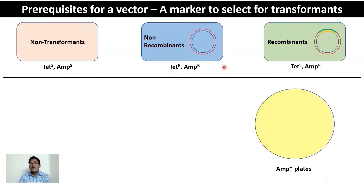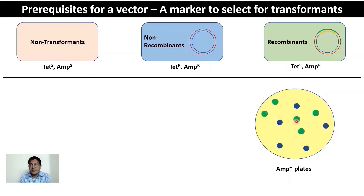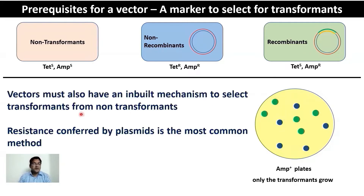In recombinant transformants, the MCS is placed within the tetracycline resistance gene. Because the insert disrupts this gene, recombinants lose tetracycline resistance but retain ampicillin resistance. Both recombinant and non-recombinant transformants are ampicillin-resistant, while non-transformants are ampicillin-sensitive. When you plate on ampicillin-positive plates, only the true transformants (both recombinant and non-recombinant) will grow, eliminating the non-transformants. This is the first selection step.